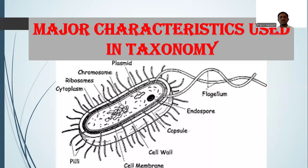Hello, dear students. In the last lecture, we discussed about the different methods of classification and how we can classify microorganisms into different kingdoms. So in this lecture, we will discuss the different major characteristics which are used in taxonomy so that we can place or identify a particular organism with respect to their different characteristics.